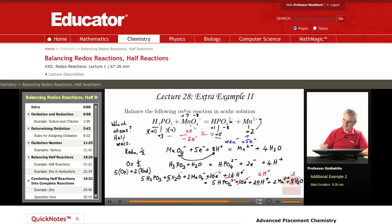So the final simplified version is 5 H3PO3 plus 2 MnO4⁻ equals 5 HPO4²⁻ plus 4 H⁺ plus 2 Mn²⁺ plus 3 H2O. That is the final balanced redox equation.